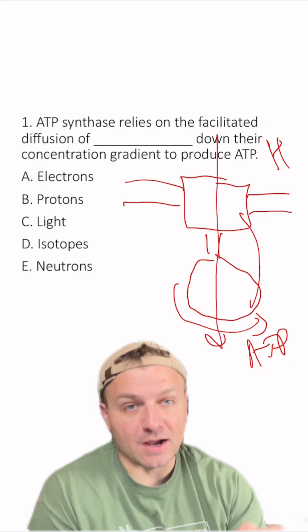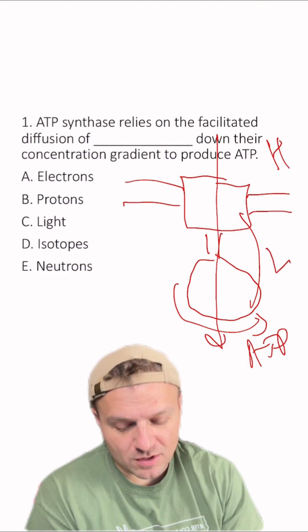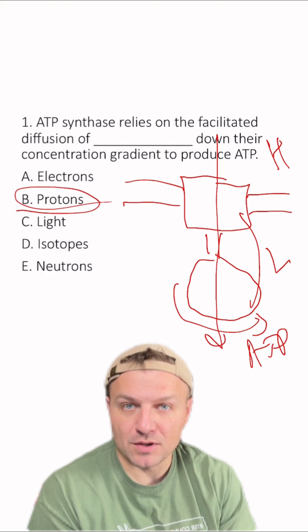Well, we have a high concentration above the ATP synthase and a low concentration below. That molecule is going to be a hydrogen ion, also known as a proton.